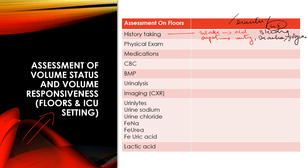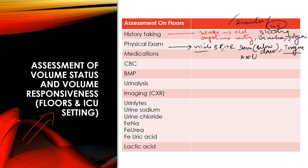Then perform a quick physical exam starting with vitals. Look at blood pressure — if low, patient may be dehydrated. Look at heart rate — patient will be tachycardic if dehydrated. Based on evidence, assess volume status at three different sites: check skin below the clavicle for skin turgor — if skin tenting lasts more than two seconds, patient is dehydrated. Look at the tongue for furrowing — if you see more than three furrows, patient is likely dehydrated. Feel the axilla — normally slightly wet, but if both axillae are dry, patient might be dehydrated.